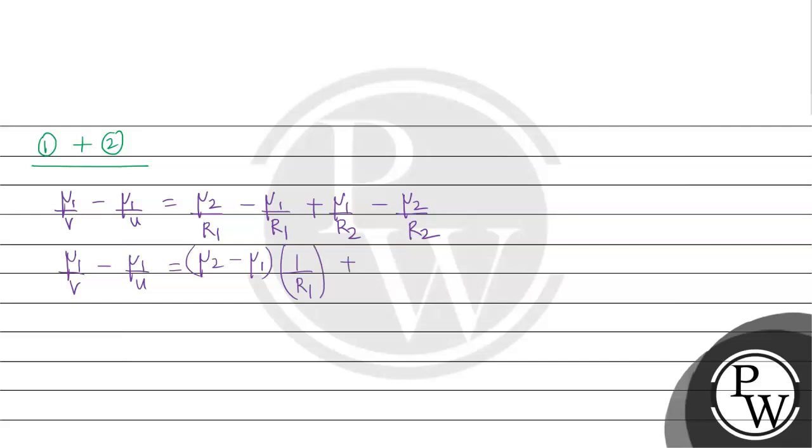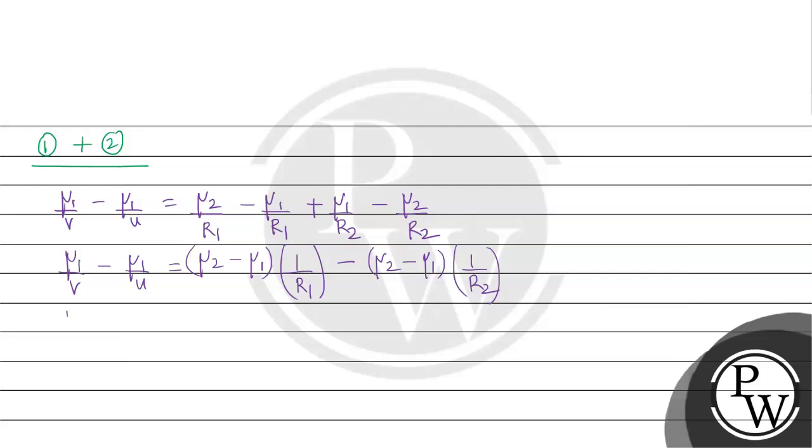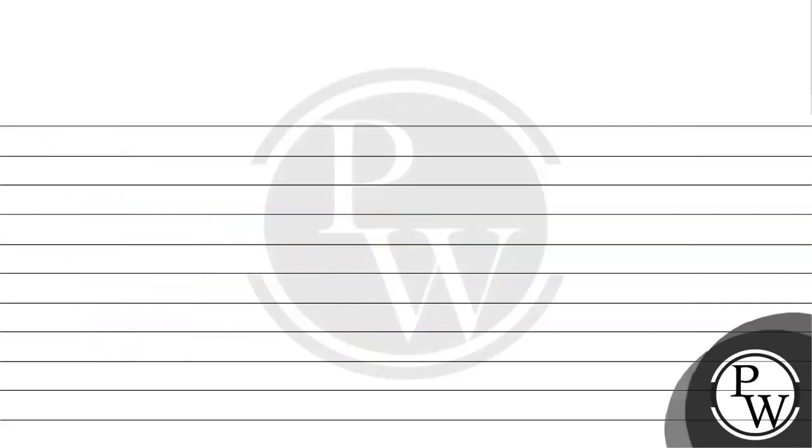In the next step, taking μ2 - μ1 common and taking negative sign common, we get μ1(1/v - 1/u) = (μ2 - μ1)(1/R1 - 1/R2).